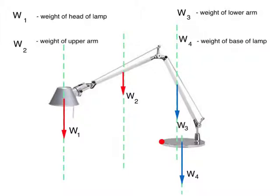If you analyse the various forces acting on the various parts of the lamp, you will have a good idea why the rotation was like that. The lamp head has a weight, the upper arm has a weight, and these two forces provide the anti-clockwise moment about the pivot at this point. The weight of the lower arm and the weight of the base will provide the clockwise moment about the pivot at the same point. If the anti-clockwise moment is more than the clockwise moment, it will rotate as mentioned earlier.